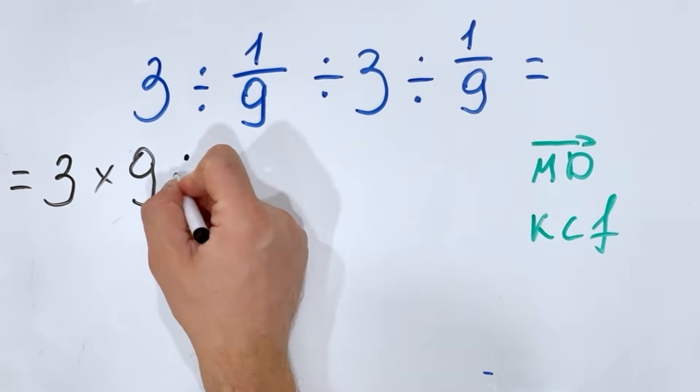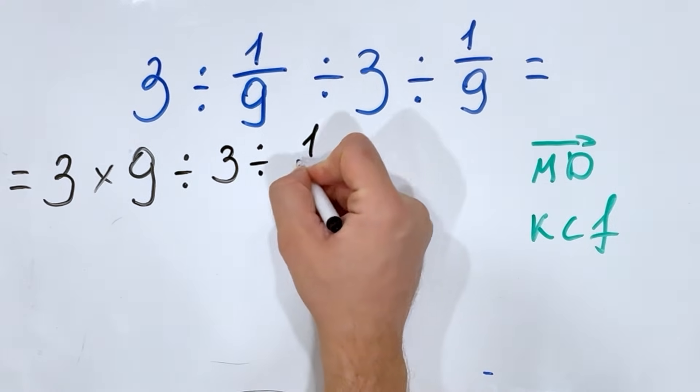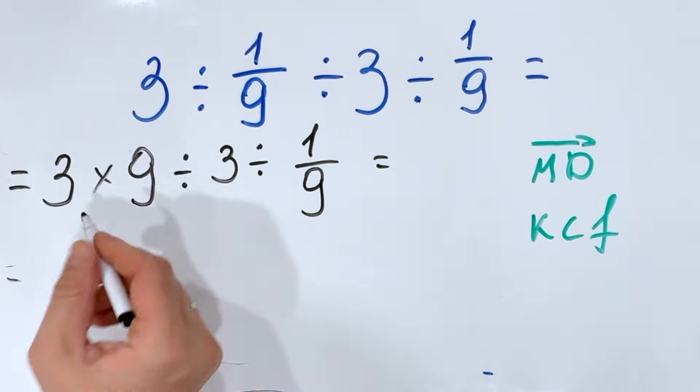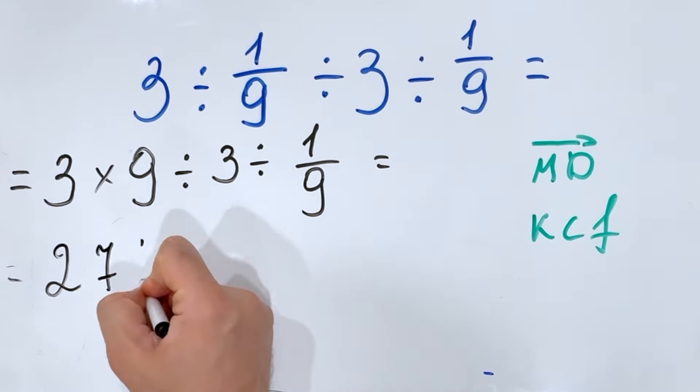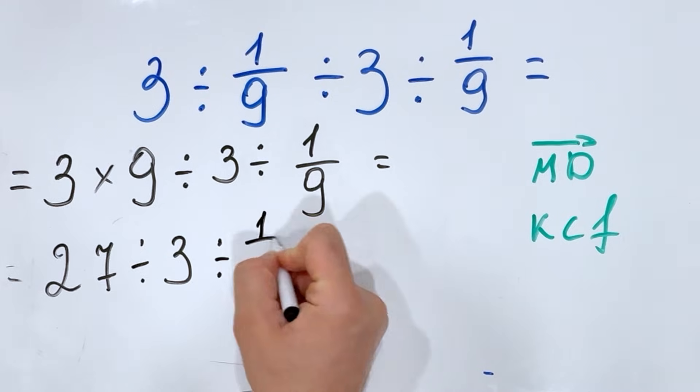Then this one, let's leave it as it is. So 3 multiplied by 9 is 27 divided by 3 and divided by 1 over 9.